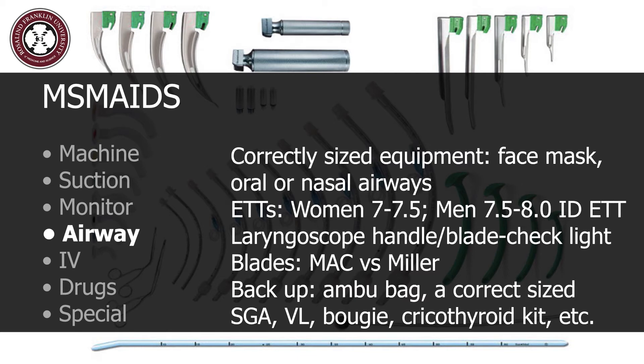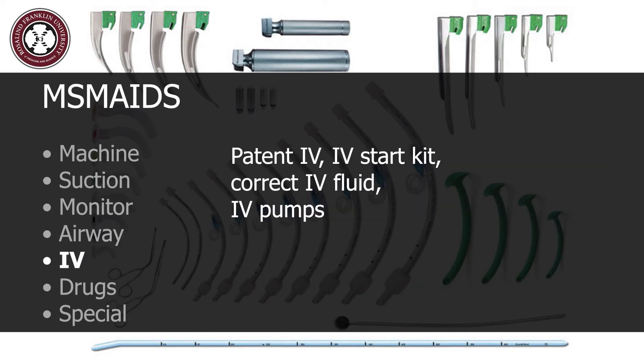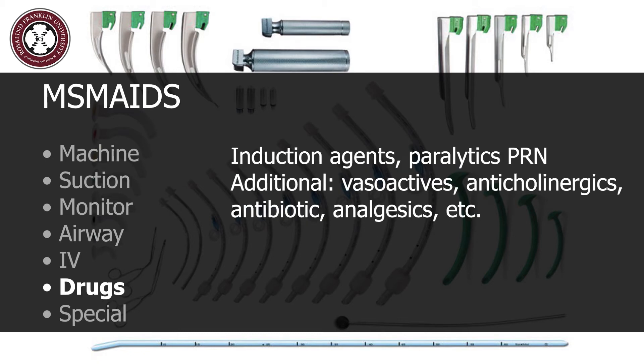Backup airway equipment such as an Ambu bag, a properly sized supraglottic airway, video laryngoscope, bougie, cric kit, etc., should also be present. IV serves as a reminder to check the patient for a functioning IV prior to induction. An IV start kit must be ready as well as choice IV fluids. Confirm an adequate amount of IV pumps present in the OR.